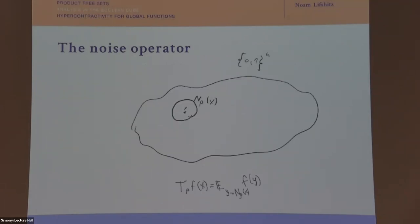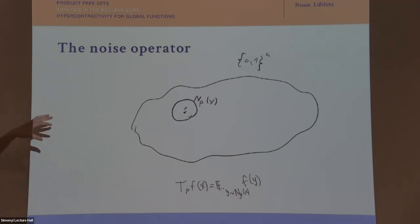Now we're ready to discuss hypercontractivity. To define it, we need the noise operator, a smoothing operator on the Boolean cube. You can think of the Boolean cube as a pattern, and for a given x in the Boolean cube we define a small neighborhood around it and take the average — smoothing the function by taking its average over this small neighborhood.